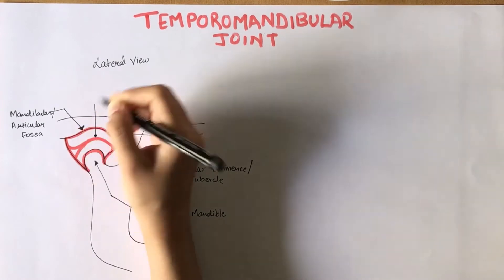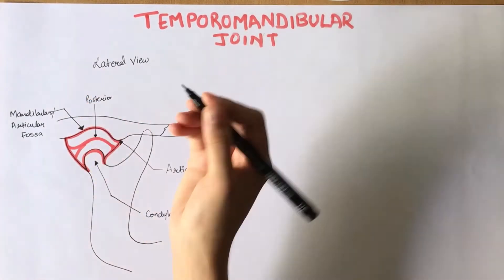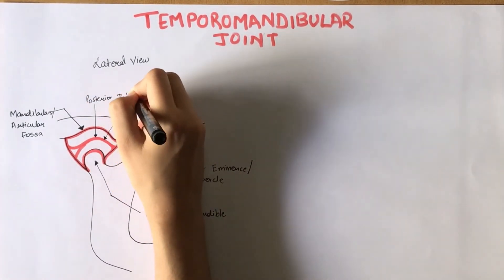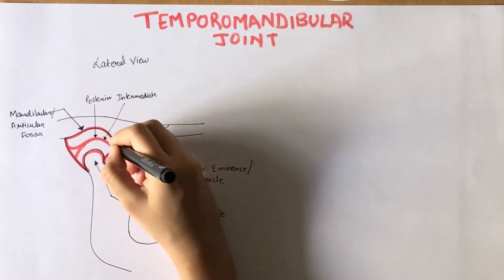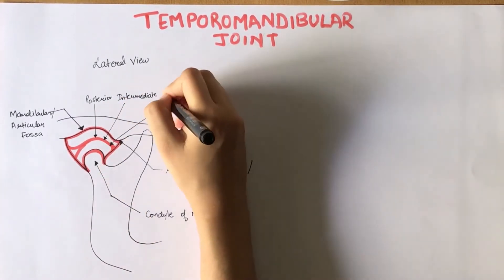Between the articulating surfaces lies the articular disc, also known as the meniscus. It provides cushioning effect to the joint. It's divided into three zones. First one is the posterior zone that lies right above the condyle in the joint space.